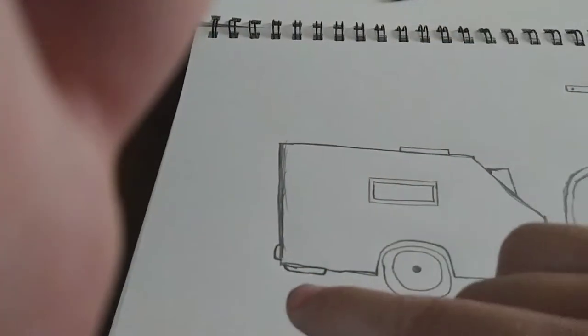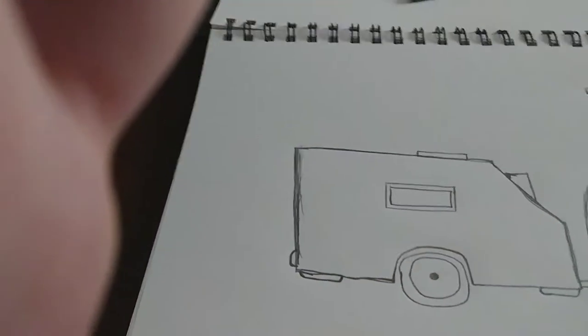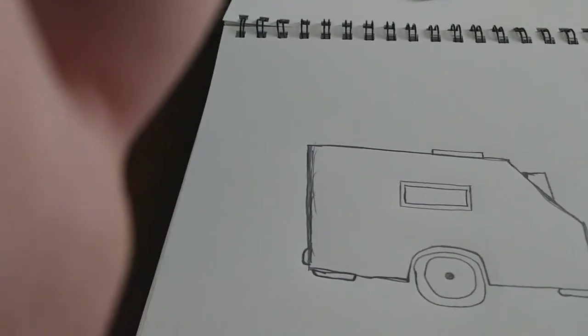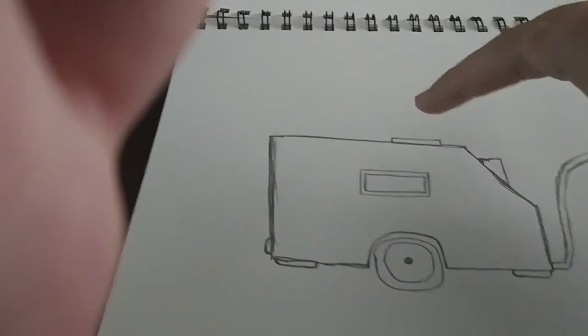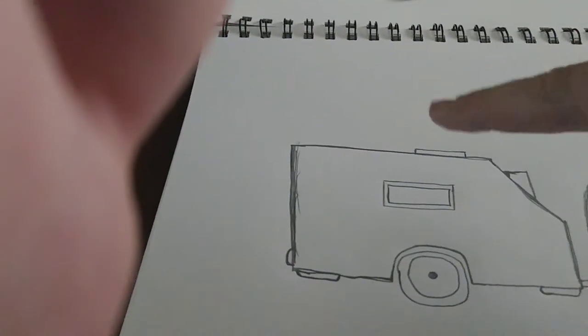And then put a taillight on the rear. And then the other side would be the door. The top will be the solar panel and these three will be the windows.